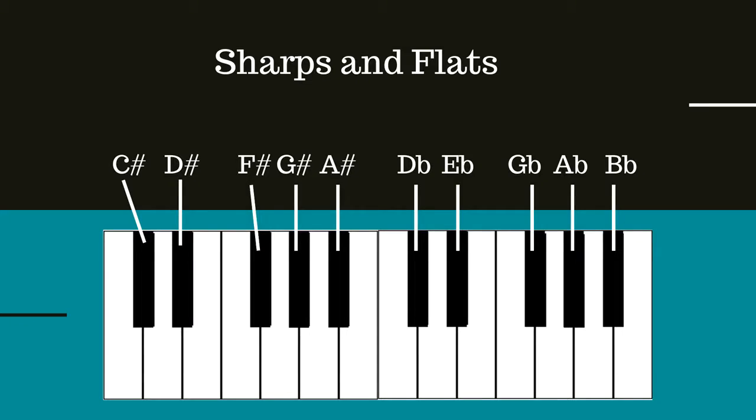Black notes are connected to the names on the white keys. They don't have their own letter name — they're going to have something sharp or something flat. A sharp is the very next note to the right; a flat is the very next note to the left. Either one can be a white or a black key.